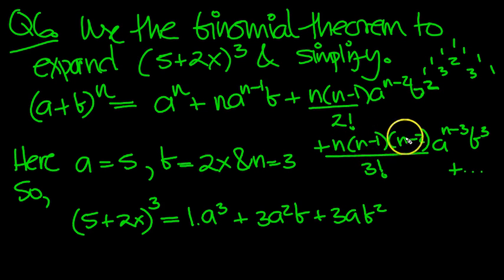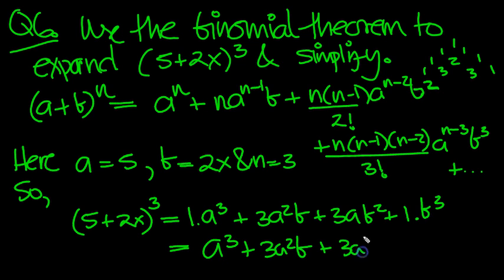And then the last power will be 3 times 2 times 1 over 3 factorial. It'll be 1. So that's 3 factorial over 3 factorial times a to the 0, which is 1, times b cubed. That's what we end up with. So that's equal to a cubed plus 3a squared b plus 3ab squared plus b cubed.